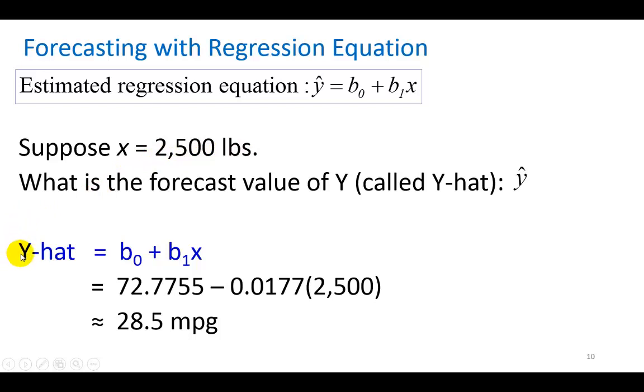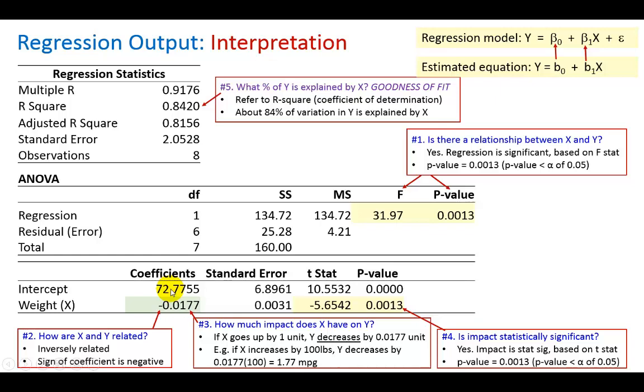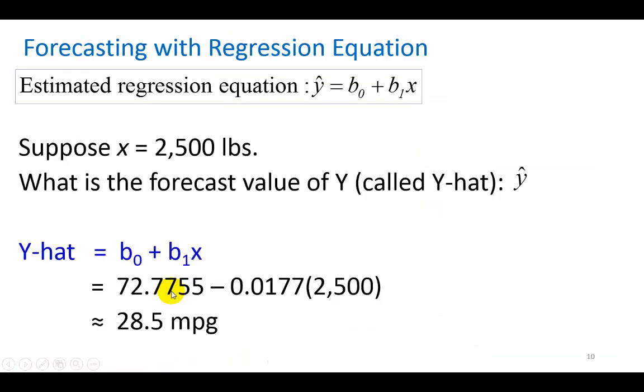First we define the estimated regression equation which is the forecast equation. We plug in the Y intercept which is 72.7755, you fetch it from there and then substitute the value for B1 which is the slope coefficient.